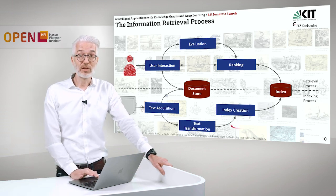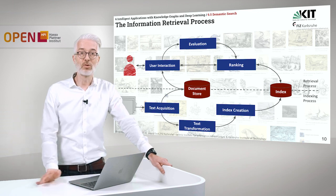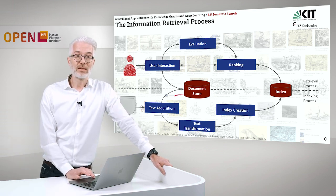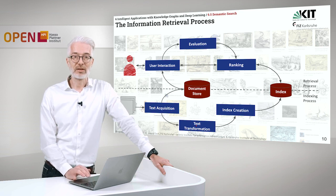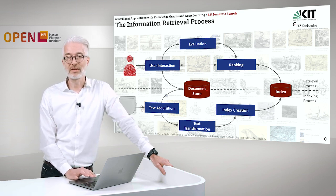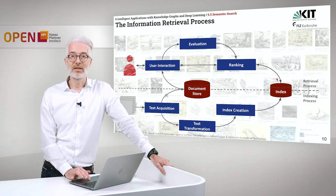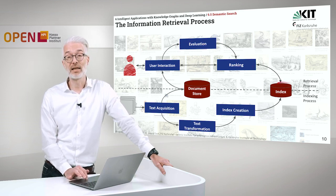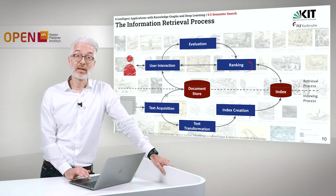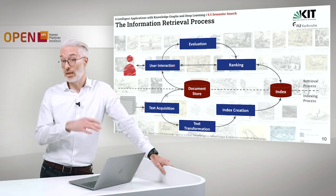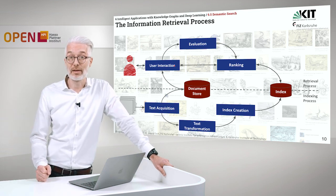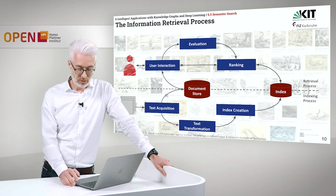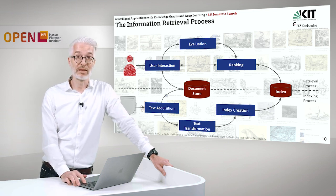By looking at the traditional information retrieval process, we have, of course, always a document store in the middle. And to fill that document store, first we have text acquisition, text transformation. An index has to be created from the text documents — and this is the index that also determines the results and the ranking. So we have a component for user interaction and an evaluation component. And in the end, we have a ranking of the results provided by the index. The ranking function, of course, should be individual for each user and determines how well the user likes the results. That's the typical retrieval and indexing process in information retrieval.